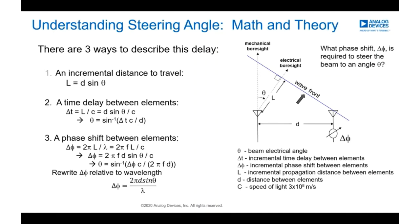That phase shift is really just the time delay at one particular frequency. If our frequency changes, our phase shift needs to change to keep the time delay the same. For relatively narrow bandwidths, phase shift is a very good approximation to the time delay. For wider bandwidths, if we don't compensate for the frequency change, we can get into an issue called beam squint, which we'll discuss later.